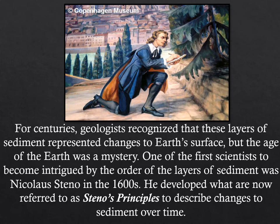One of the first scientists to become intrigued by the order of layers of sediment was Nicola Steno in the 1600s. Steno was an anatomist fascinated by the similarities of parts of living creatures. He extended this concept to the rocks around him to recognize that creatures of today are a byproduct of their natural environment, and that rocks recorded changes to that environment, which in turn are reflected by the preserved remains of living things in the rocks. He developed what are now referred to as Steno's principles or Steno's laws to describe changes to sediment over time.